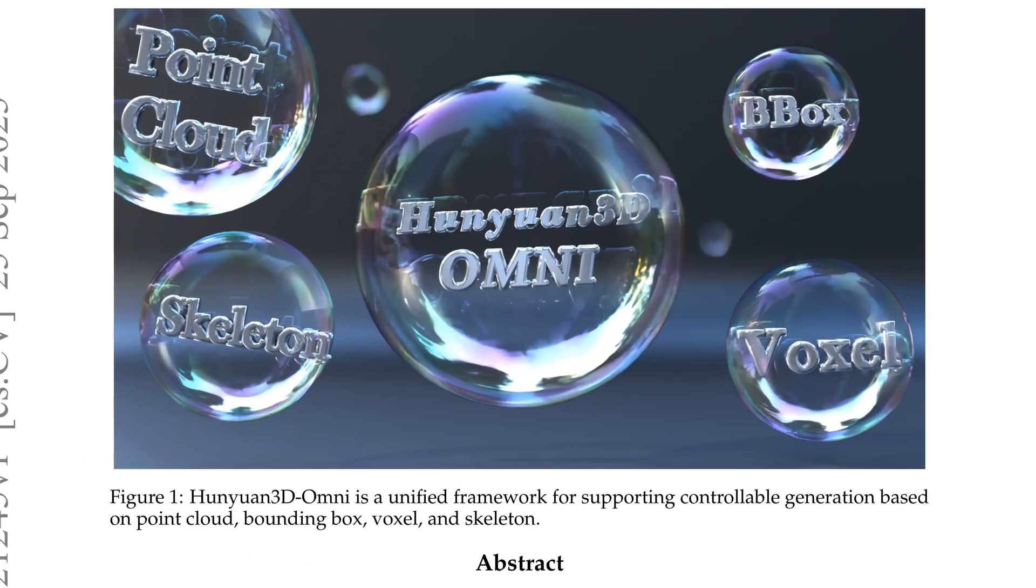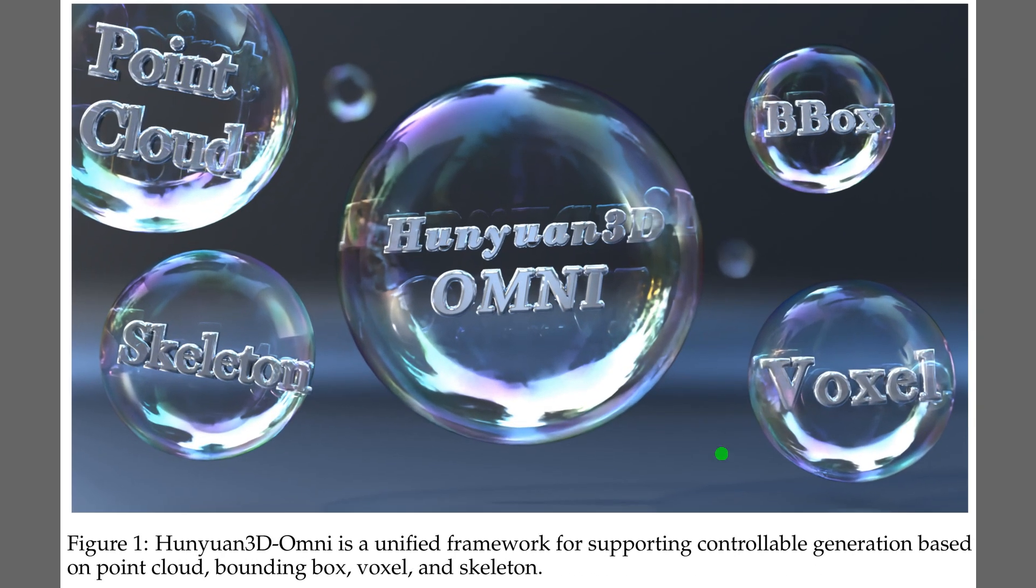Figure 1 highlights a unified system that accepts several geometric control signals to steer 3D asset generation. The central bubble emphasizes the Omni model, which integrates all controls in one architecture, so creators get precise geometry and pose alignment.